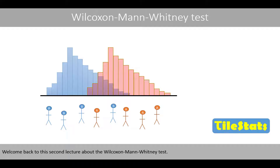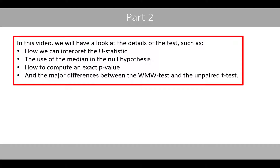Welcome back to this second lecture about the Wilcoxon-Mann-Whitney test. In this video, we'll have a look at the details of the test, such as how we can interpret the U statistic, the use of the median in the null hypothesis, and how we can compute an exact p-value. We'll also have a look at the major differences between the Wilcoxon-Mann-Whitney test and the unpaired t-test.